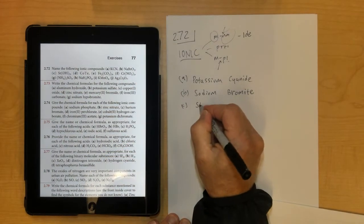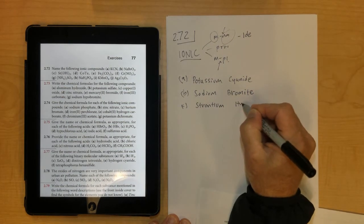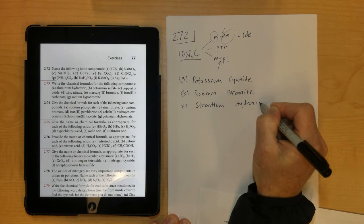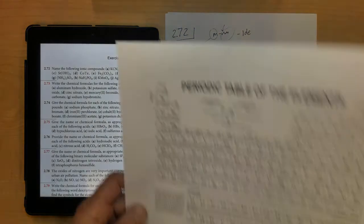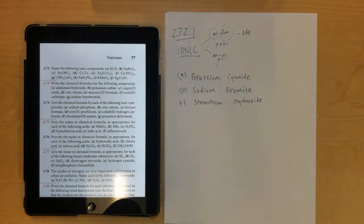Letter C, strontium, and then hydroxide is the polyatomic ion. Once again, since strontium is in group 2, group 2 is always plus 2, you don't need a Roman numeral.